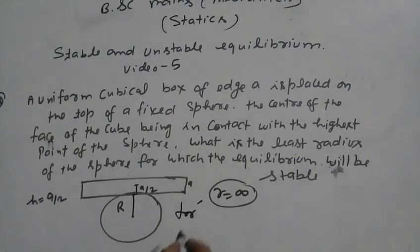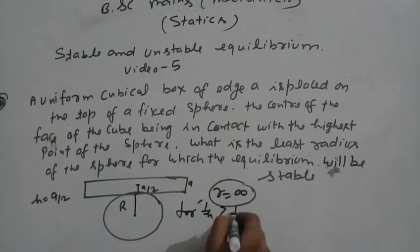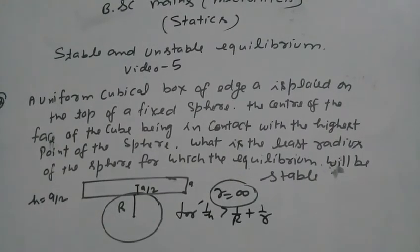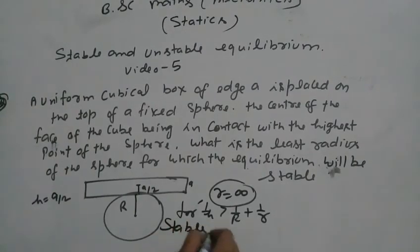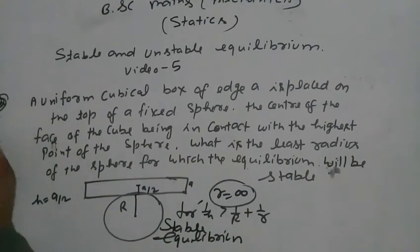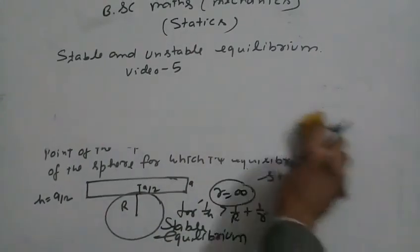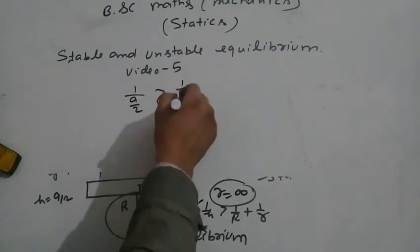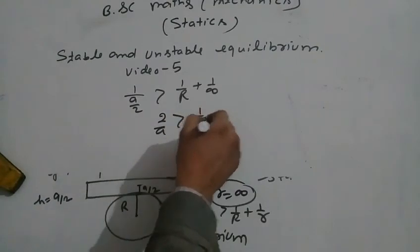We have 2/a is greater than 1/r plus 1/infinity. This gives 2/a is greater than 1/R plus zero.